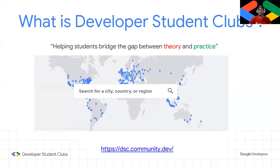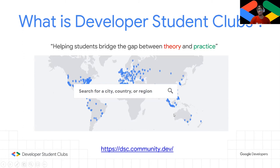This is a quick representation of all the Developer Student Clubs around the world. This is the first year in Australia, so there's not much at the moment, but it has been going on all around the world and we're happy to see Australia being part of the Developer Students Club community.